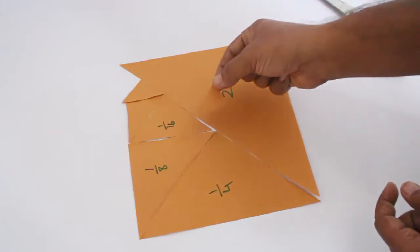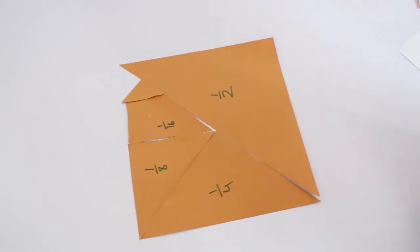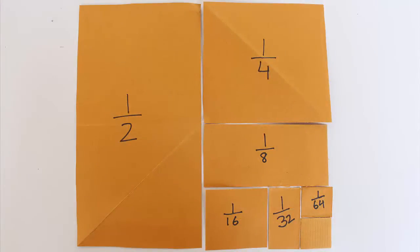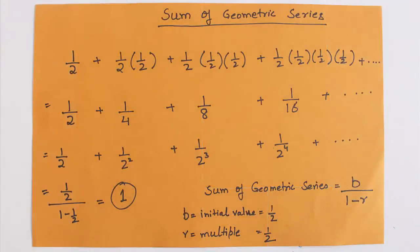And so the sum of this series, half, one-fourth, one-eighth, will be one. And you can perform the same experiment by cutting the square along the sides and you will get the same answer.